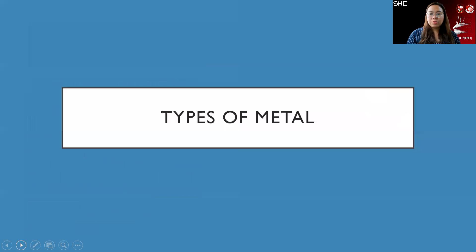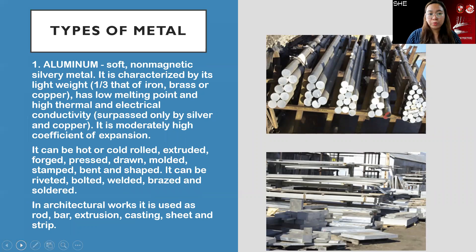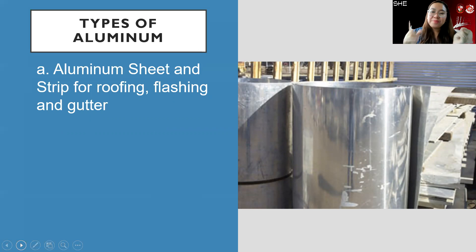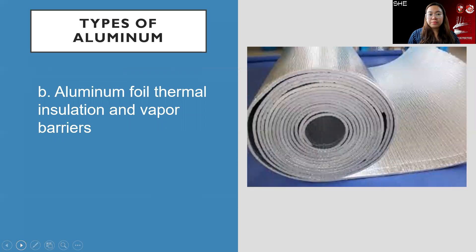There are different types of metal. The first type we will discuss is aluminum — a soft, non-magnetic, silvery metal. In architecture, it is used as rod, bar, extrusion, casting, sheet, and strip. Aluminum sheet and strip are used for roofing, flashing, and gutters. The standard sheet size is 1.2 by 2.4 meters, similar to a full sheet of plywood, commonly used for roofing, flashing, ridge rolls, and gutters.